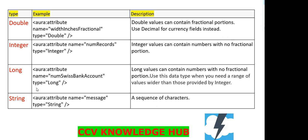The last one is String. The syntax is: aura:attribute name equal to 'message', type equal to String. String contains a sequence of characters.